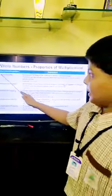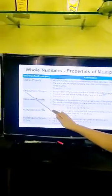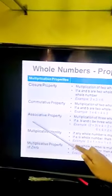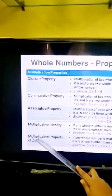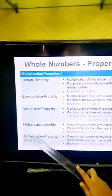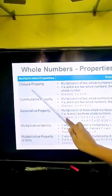Now we will explore multiplication. There are five properties: closure property, commutative property, associative property, multiplicative identity, and multiplicative property of zero. First, closure property: the multiplication of two whole numbers is always a whole number. For example, two into three is equal to six.